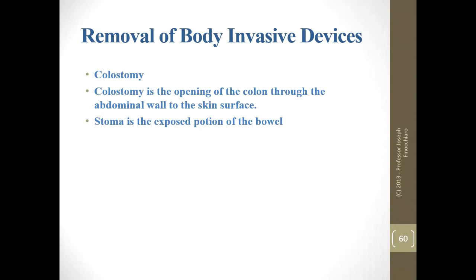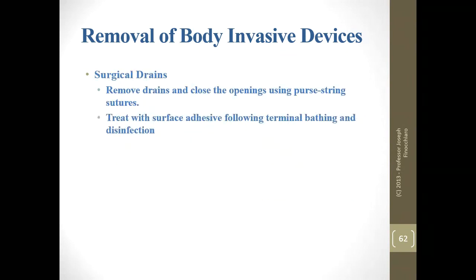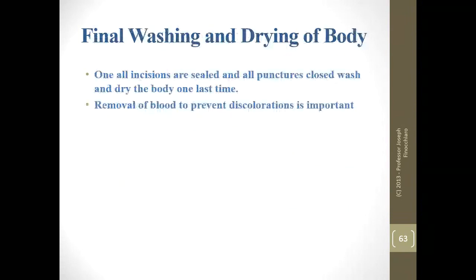For colostomies, a lot of professionals just leave these in place, but realistically we're supposed to remove the bag, disinfect it, and dispose of it. Then disinfect the body and stoma with a surface pack, force things back in, suture it shut, and seal the hole — that is the proper textbook way of dealing with this. For surgical drains: remove the drain and purse-string it shut. If it's small enough, use a trocar button, then treat with surface adhesive to make sure it doesn't leak.